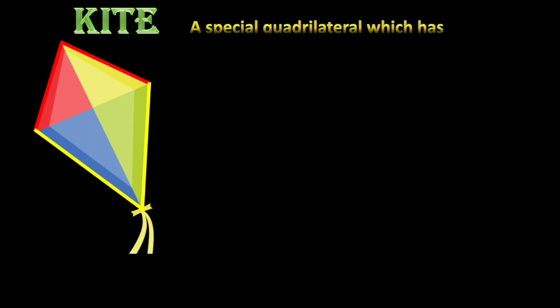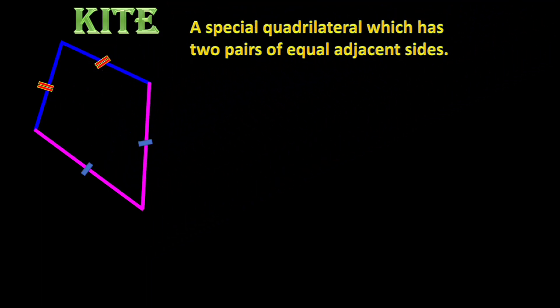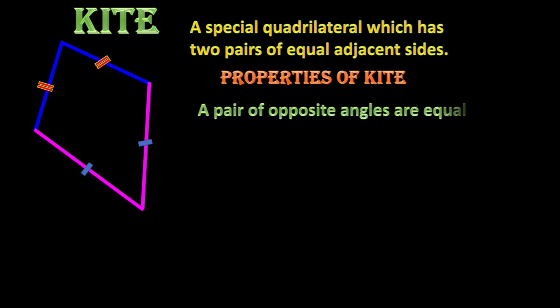Now, a kite — all of you are familiar with a kite, and the geometrical shape is also called a kite. A kite is a special quadrilateral which has two pairs of equal adjacent sides. Two distinct pairs of consecutive sides are equal in this quadrilateral. A pair of opposite angles are equal.